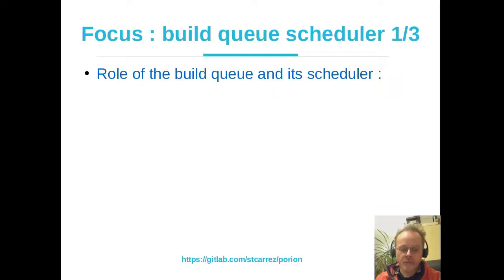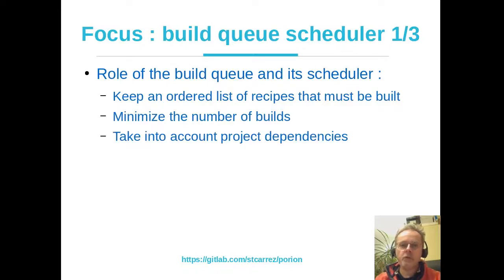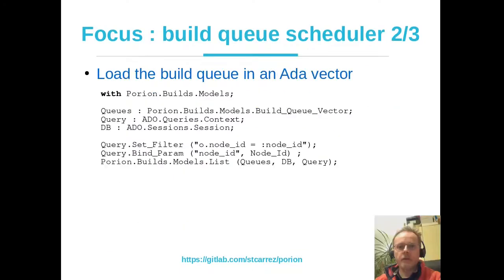Let's look at the build queue scheduler. The build queue contains a list of receipts to be executed on build nodes. The scheduler keeps that list ordered while minimizing the number of builds and accounting for project dependencies. For example, with projects where B and D depend on A, and C depends on B: if the queue has A, C, D and we add B at the end, building B would re-trigger C unnecessarily. The scheduler reorganizes the queue — still building A, but placing C after B. To implement this, we load the build queue into an ADA vector using a query filtered to the current build node.